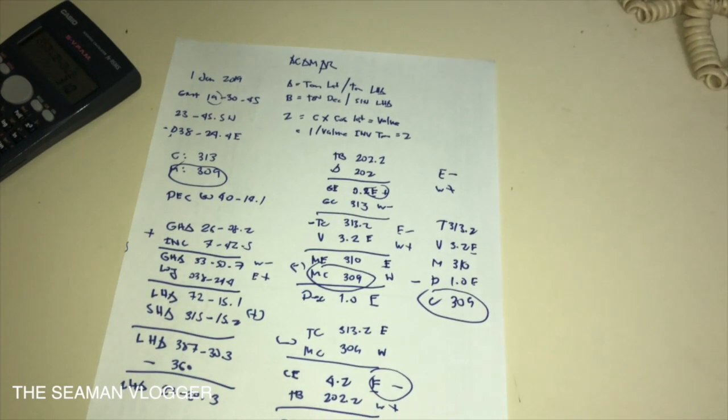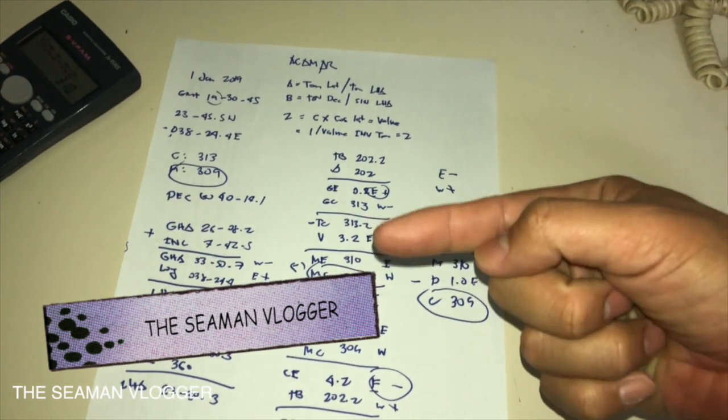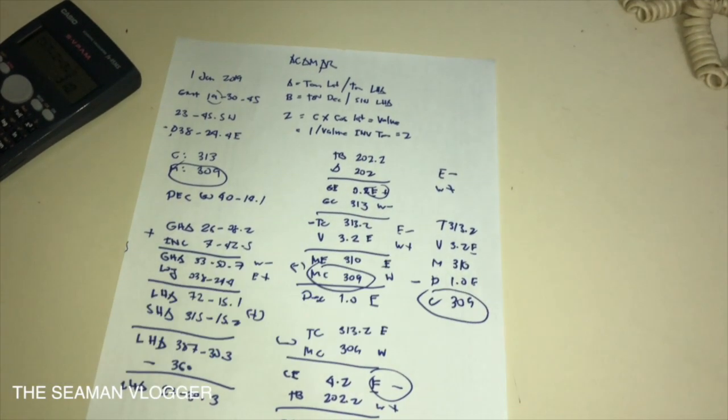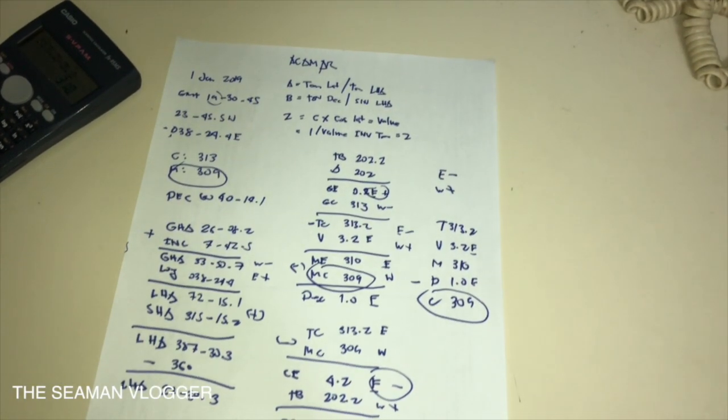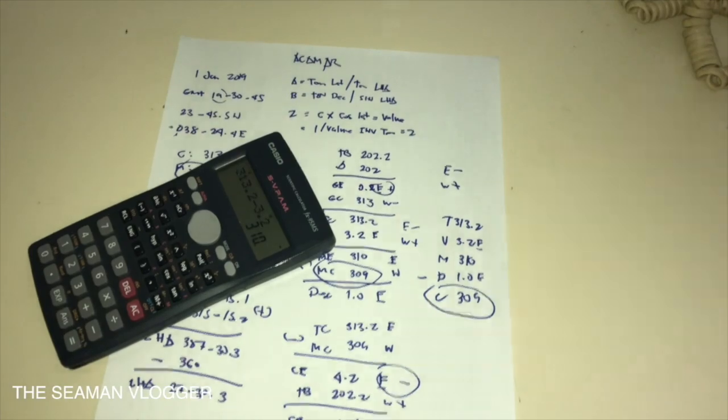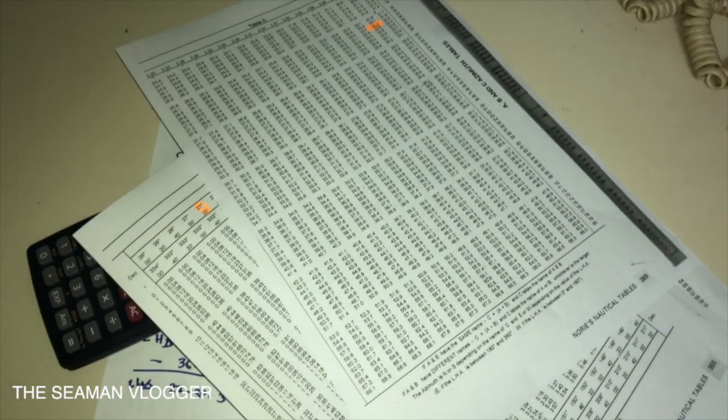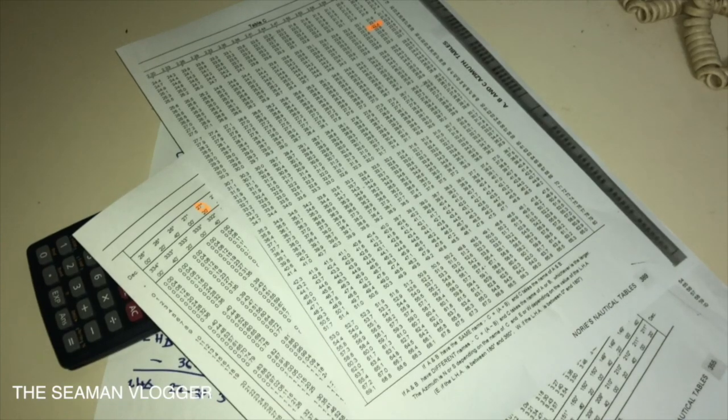By the way, if you like this vlog, kindly like and subscribe to my YouTube channel and Facebook page. The name is The Seaman Vlogger. That's it. I finished my vlog and I recalculated vlog 39. All is correct from Scientific Calculator and the photocopy of the Norris Nautical Table. Thank you very much. See you on my next vlog.